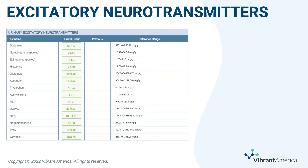On this page, we can see the excitatory neurotransmitters and their associated levels. This includes neurotransmitters such as dopamine, norepinephrine, epinephrine, histamine, glutamate, aspartate, acetylcholine, and their corresponding metabolites. Understanding the excitatory neurotransmitter levels can provide valuable information about somebody's overall excitation in the nervous system.